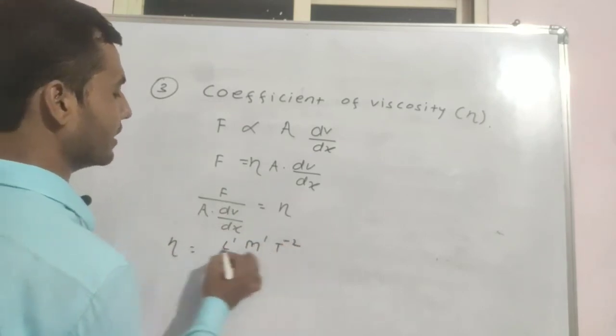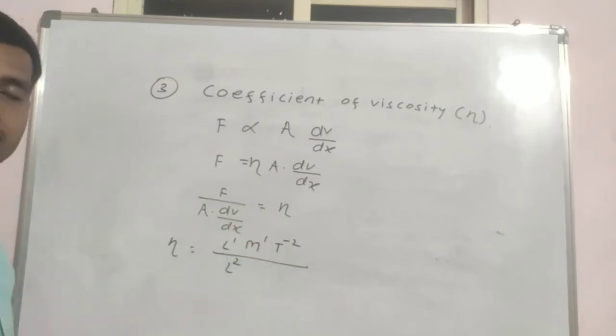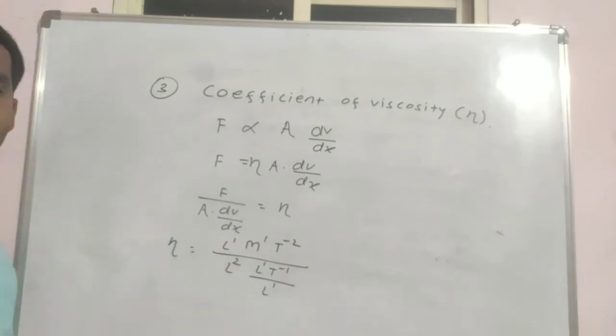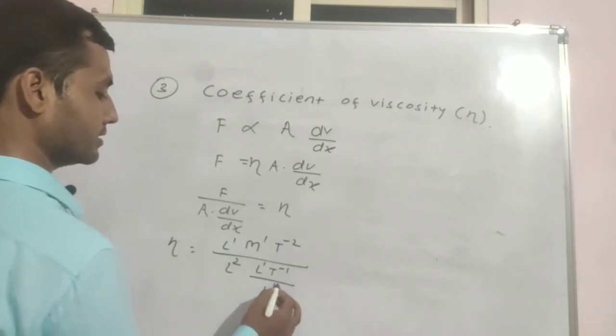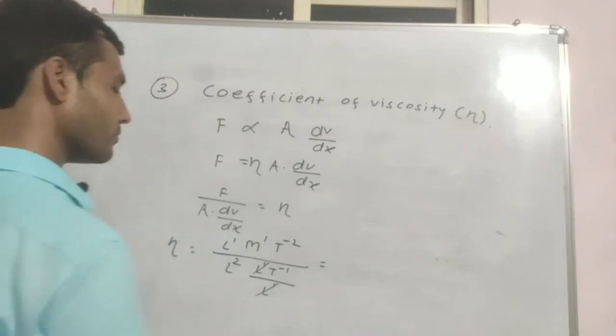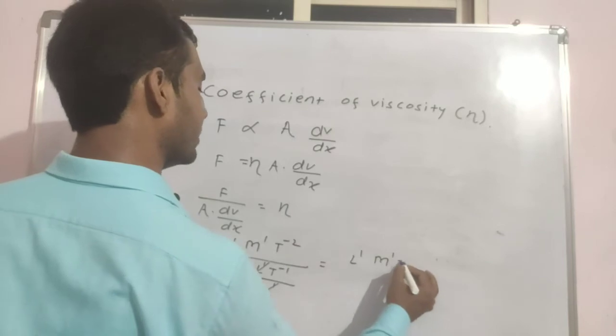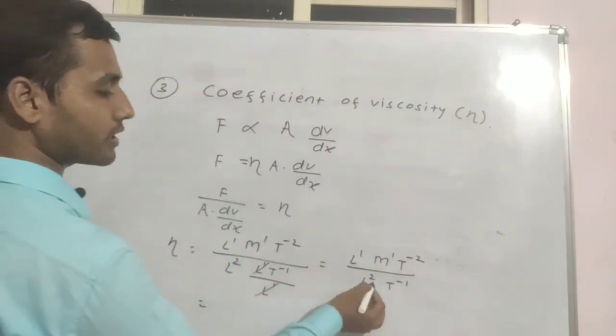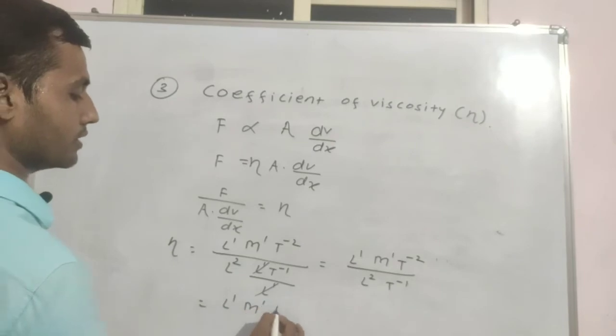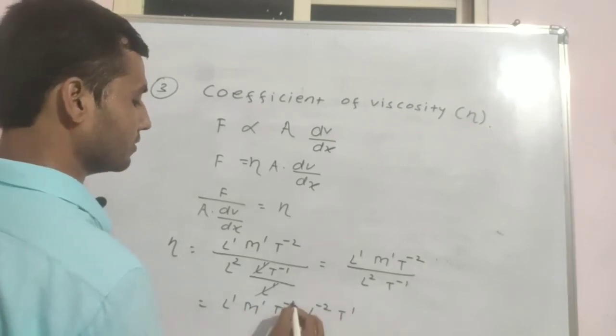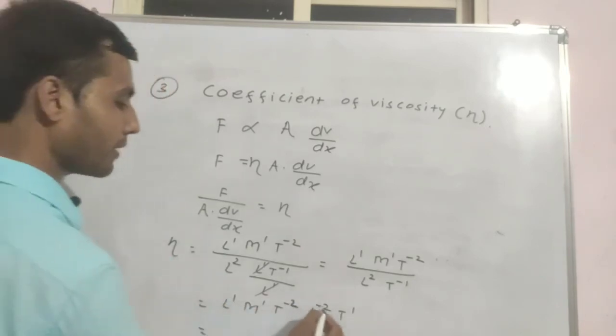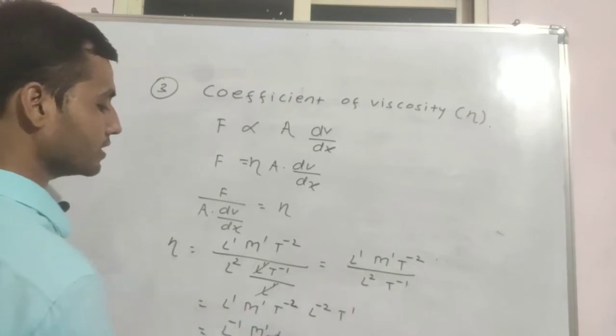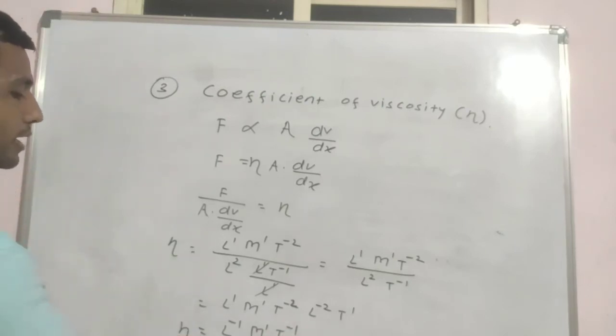So now you have to put the dimensions. For F, the dimension is l1 m1 t minus 2. Area is l2. dv is rate of change of velocity, so velocity dimension is l1 t minus 1, and dx is change in length. So from this you have l1 m1 t minus 2 divided by l2 and t minus 1 going up becomes l minus 2, l1 m1 t minus 2 l minus 2 and t1. So from this we can write plus 1 minus 2, this will be l minus 1, this is m1, and minus 2 plus 1 is t minus 1. So this is the dimension of viscosity.